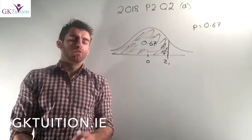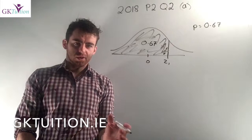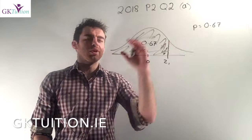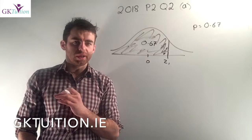In the first part of this question we're given a normal curve and the z-score is marked in as z1. All we're told is that 67% of figures lie below this z-score in a normal curve — in other words the proportion of figures below this z-score is 0.67 — and they ask you to find the value of z.